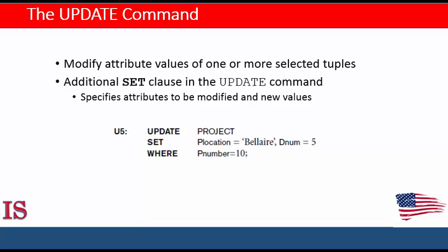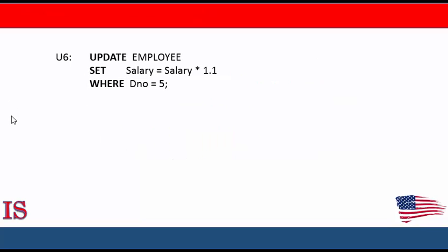The UPDATE command is used to modify attribute values of one or more selected tuples. As in the DELETE clause, a WHERE clause in the UPDATE command selects the tuples to be modified from a single relation. However, updating the primary key may propagate to the foreign key values of tuples in other relations if such a referential triggered action is specified in the referential integrity constraints of the data definition language. An additional SET clause in the UPDATE command specifies the attributes to be modified and their new values. For example, to change the location and controlling department number of project number 10 to BEL AIR and 5 respectively, we use U5. Several tuples can be modified with a single UPDATE command — an example is to give all employees in the research department a 10% raise in salary, as shown in U6.